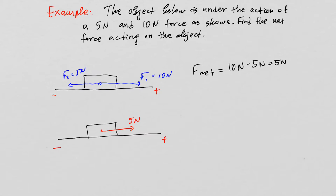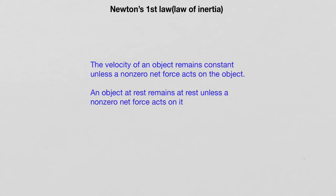Now let's look at Newton's laws of motion. Newton's first law, also known as the law of inertia, states that the velocity of an object remains constant unless a non-zero net force acts on the object, and that an object remains at rest unless a non-zero net force acts on it.